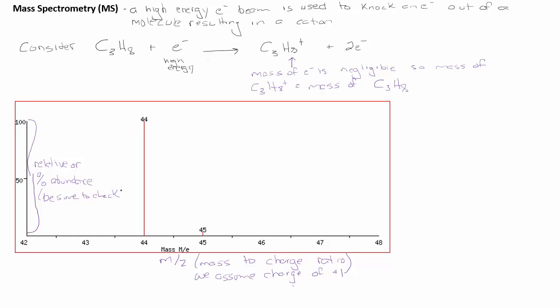So the y-axis here would be relative or percent abundance. Be sure to check just in case there's any type of follow-up question that you may be asked about actual percent abundance. You can see here this would actually be relative abundance because that peak at 44 actually goes all the way up to 100, and then the peak at 45 you can see has about 3. So I would actually have to recompute if I needed to determine the percentage.